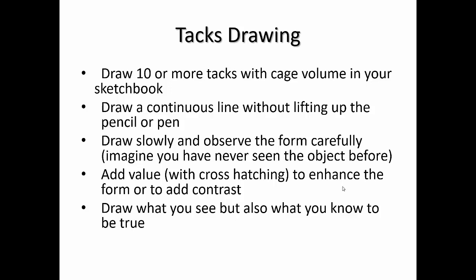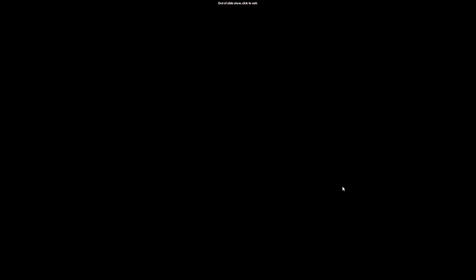Or a little ant crawling around the object that you've never seen. It's sort of new and never been described before, essentially. Then you can add value through cross hatching to enhance the form or to add contrast. But draw what you see but would also need to be true. Meaning that you actually rotate the object. That's why the tack's really good, because you can fit it in your hand and rotate it around. So here's another example of some tacks. So you'll do 10 of those.